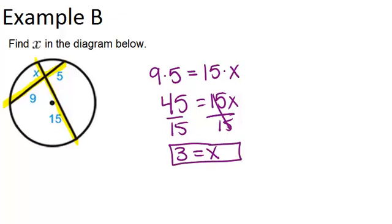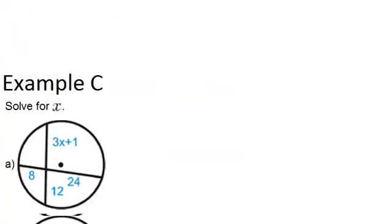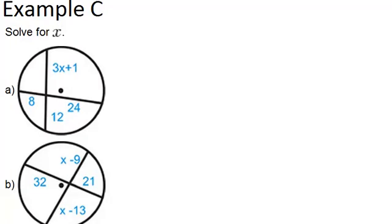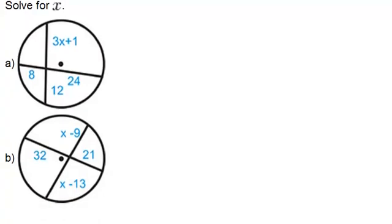Finally, let's look at example C. Alright, solve for X, and it looks like we have two parts. And it's the same situation in each case. We have two intersecting chords. So you just need to match up the segments that are on the same chord and multiply them. So for A,